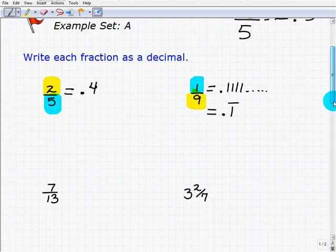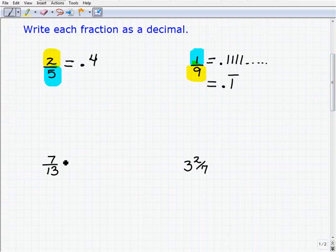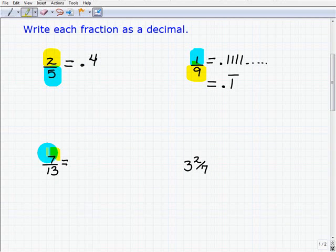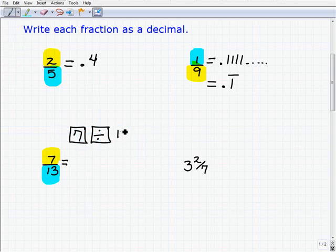Alright, moving on. Okay, so we have 7 thirteenths. So if you feel comfortable with what we're doing here, go ahead and get your calculator out and tell me what 7 thirteenths is as a decimal. Okay, so to do that, you're going to take 7, you're going to plug that into your calculator, you're going to hit the division operator, and then you're going to plug in 13. So let's be clear here, you're going to go 7 on your calculator, division, and then 13, and then you're going to hit equal. So let's go ahead and do that.